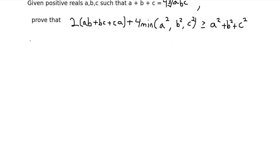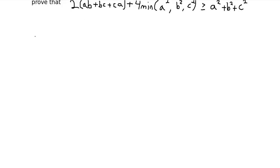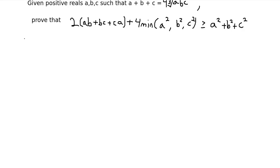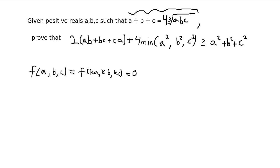Homogeneity is basically where you have an equation and you can arrange it so that f(a, b, c) is the same as f(ka, kb, kc). A homogeneous equation is one where you can scale all of the variables and it won't affect the value of your function. An equivalent condition is that every term in your equation has to have the same degree.